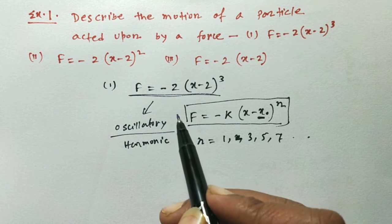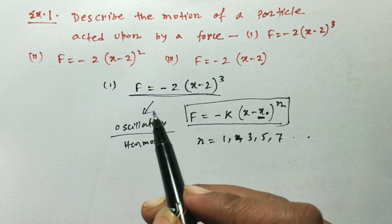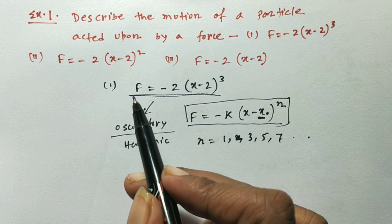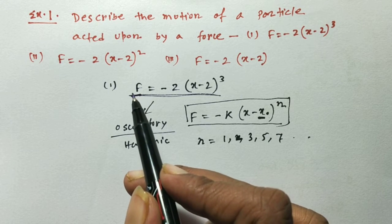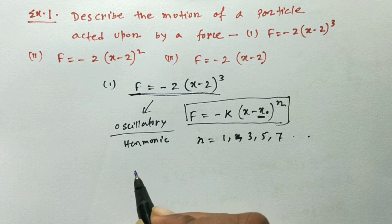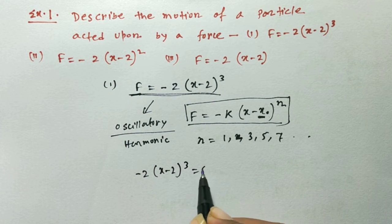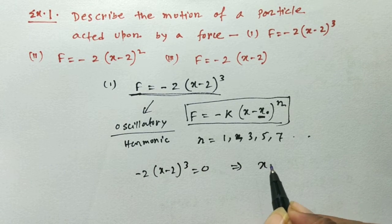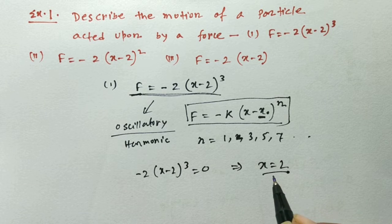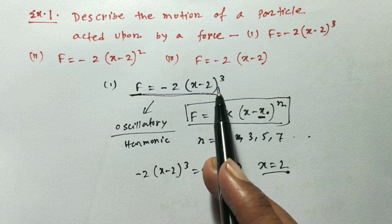We can understand this in another way: at a stable equilibrium point, the force must be zero. If we set F equals 0, then minus 2 into (x minus 2) whole cube equals 0, which gives x equals 2. So the stable equilibrium point can also be found by equating the force to zero. When n is odd, the motion will be harmonic; if n is not odd, the motion will not be harmonic.